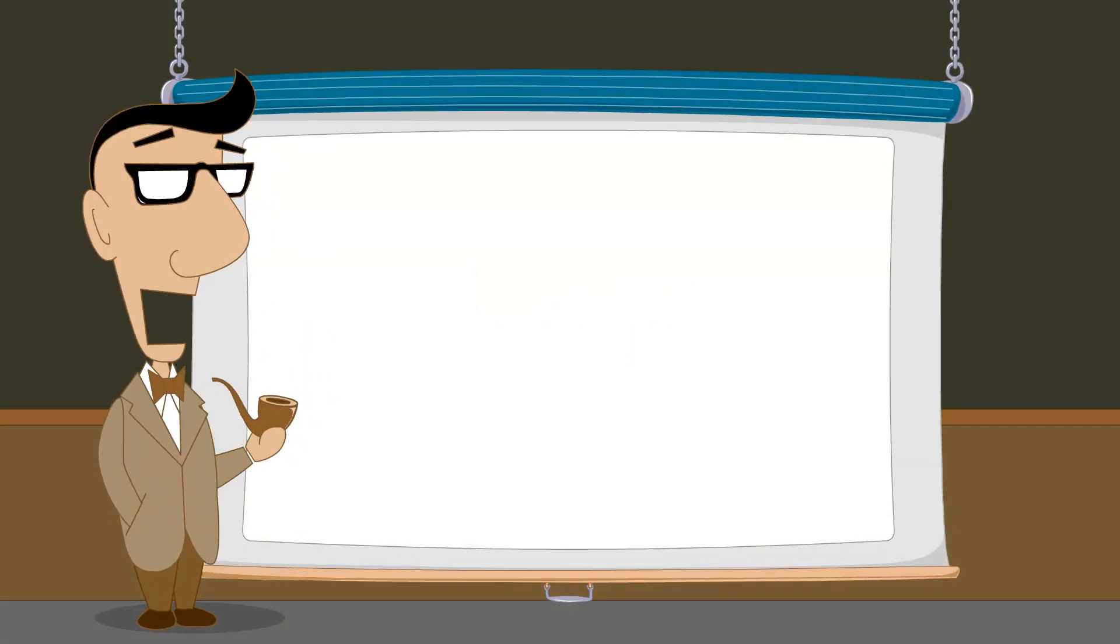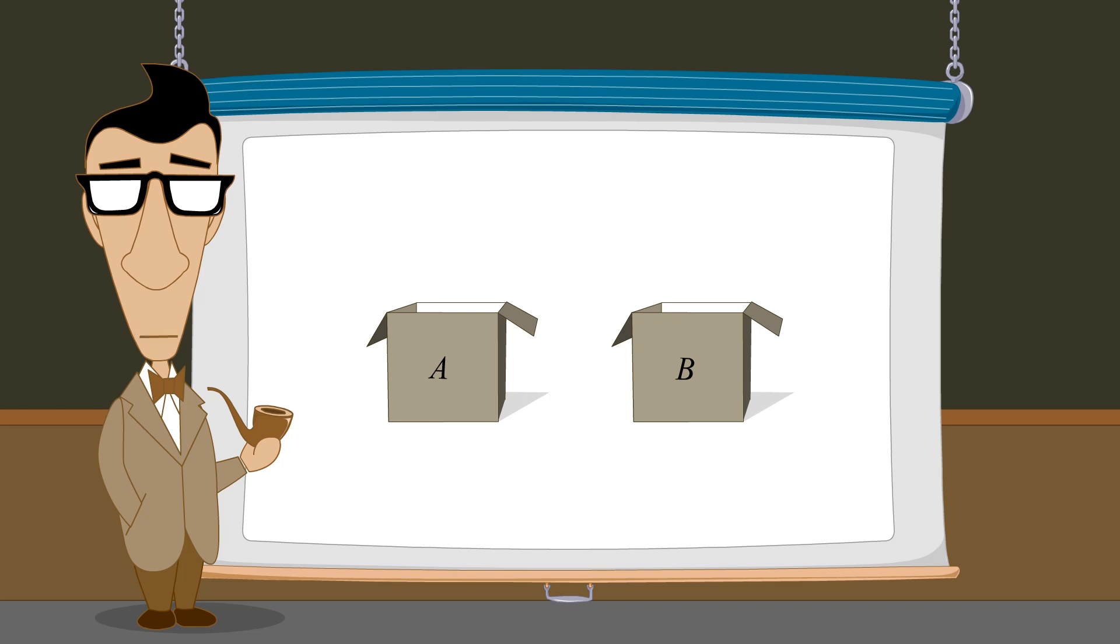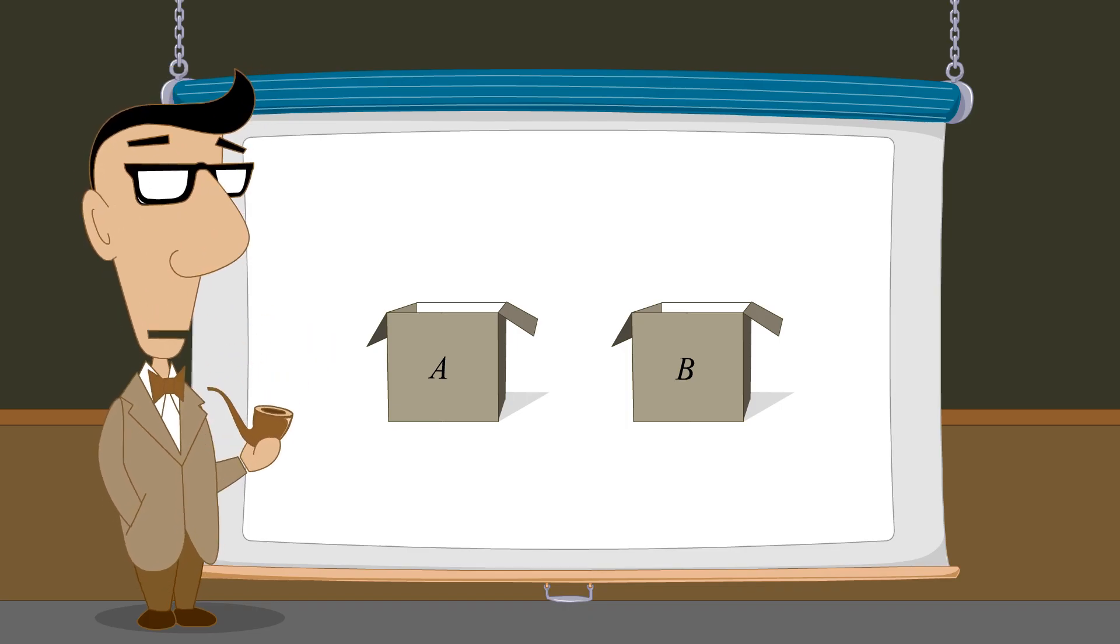We define a set by specifying all its members. There are several ways to do this. One way is by writing a list of all the members of the set separated by commas and enclosing the list in curly brackets. For instance, we can define set A to be a set whose members are the numbers 1, 2, and 3.